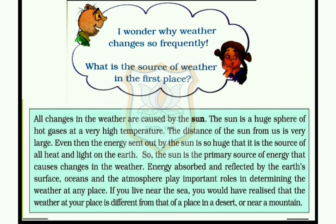The sun is the primary source of energy that causes changes in the weather. Energy absorbed and reflected by the earth's surface, oceans and the atmosphere play important roles in determining the weather at any place. If you live near the sea, you would realize that the weather at your place is different from that of a place in a desert or near a mountain. So, all changes in the weather are caused by the sun, which is the primary source of energy that drives weather changes.